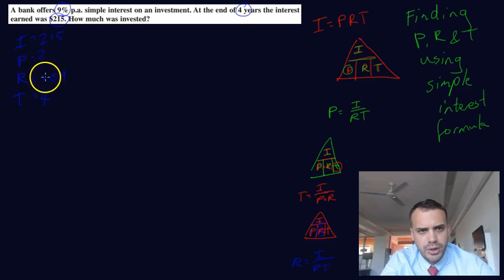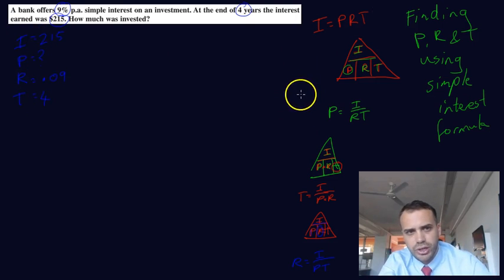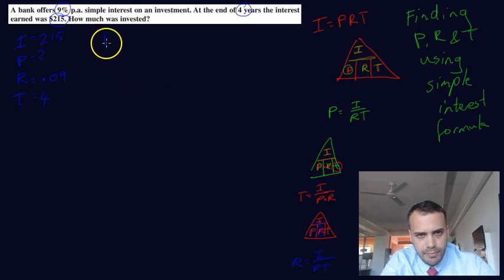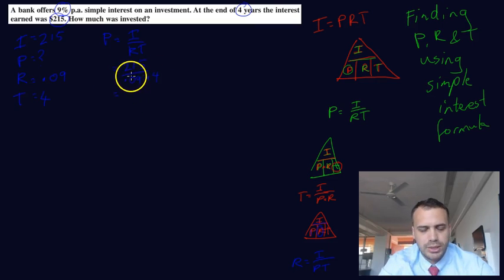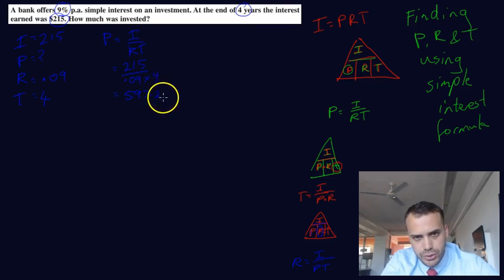So the thing that we don't know is P. We know I, we know R, we know T. Now using our triangle, if we want to find P, P equals I over R times T. Put in everything we know. So $215 over 0.09 times 4. Put that into our calculator and we've got an answer. And we get $597.22.